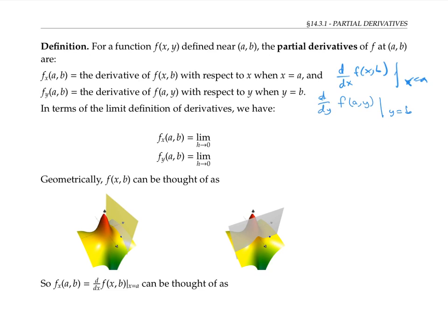In terms of the limit definitions of derivatives, we have f_x(a,b) is the limit as h goes to zero of [f(a+h,b) minus f(a,b)] over h. That's because we're letting the x variable vary and holding the y variable constant at b.